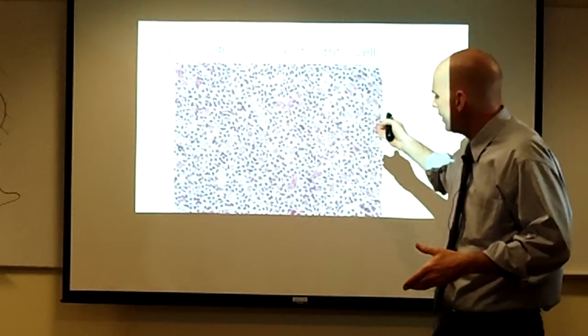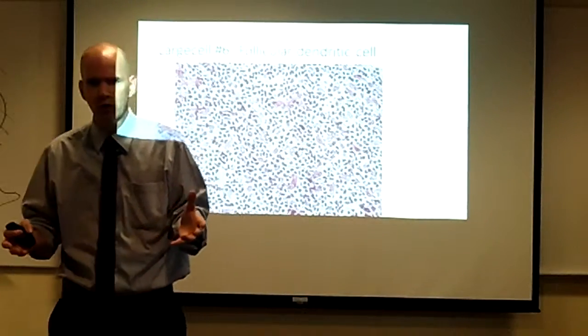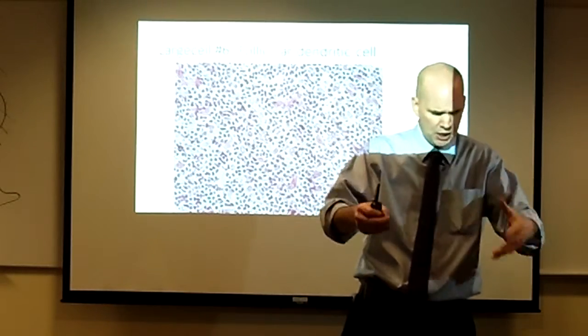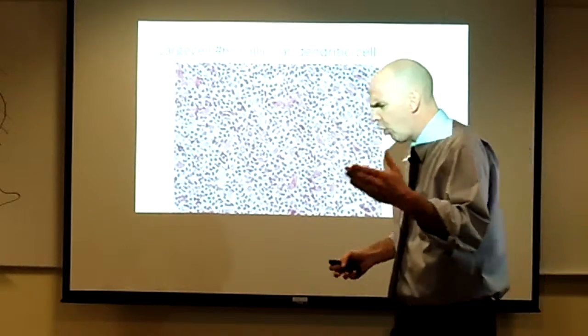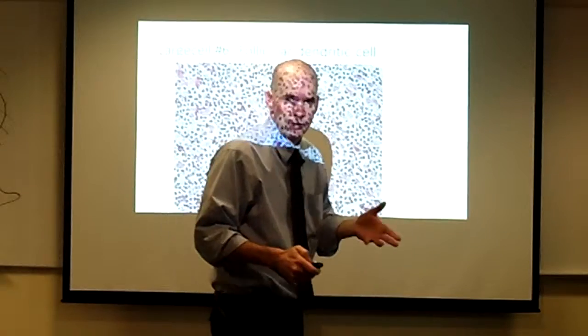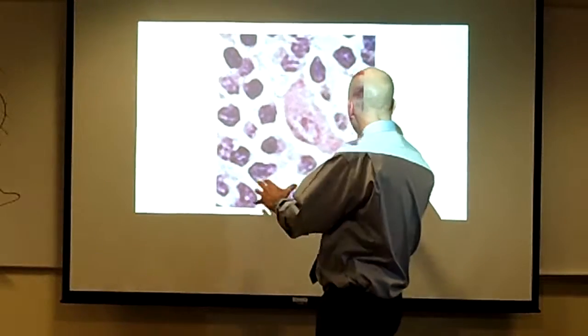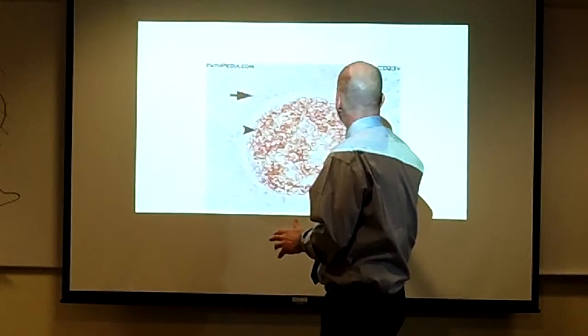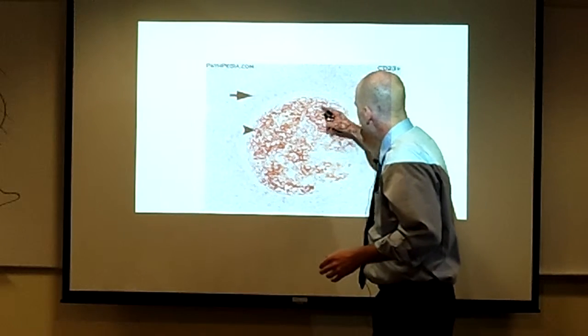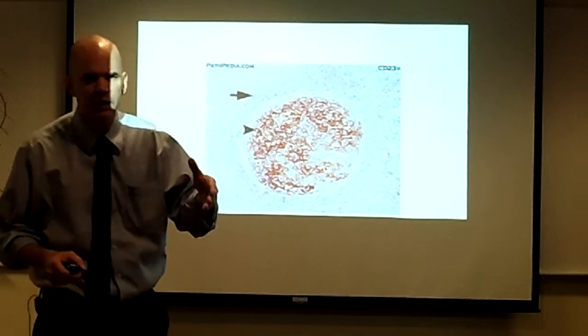And also, unlike interdigitating dendritic cells, these cells don't express antigen on MHC molecules. Instead, they present unprocessed antigen in immune complexes that they hold onto via complement receptors like CD21 and CD35 and via FC receptors like CD23. Here's just a follicular dendritic cell with lots of B cells around it. Here's staining for CD23 that highlights the extensive cytoplasmic processes of follicular dendritic cells studded with CD23 FC receptors.